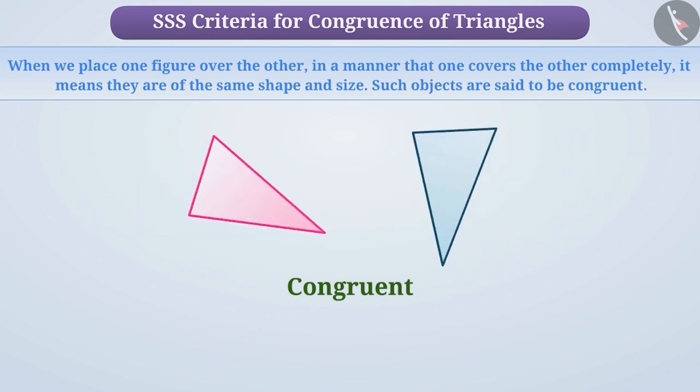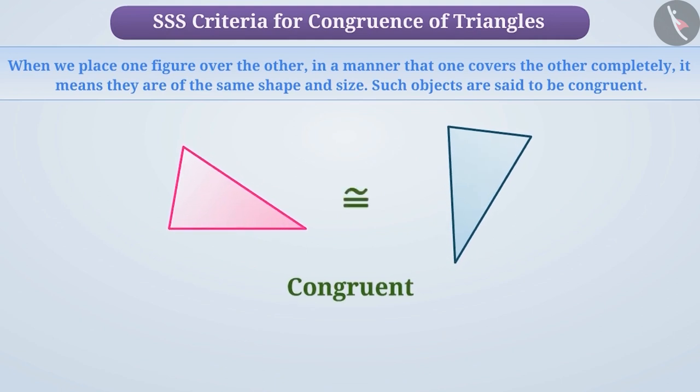Look at the two triangles here. When we place one over the other, we observe that they cover each other completely. So both the triangles are congruent.